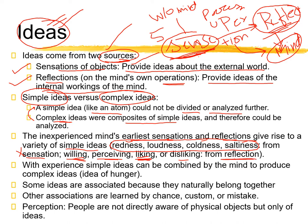With experience, simple ideas can be combined by the mind to produce complex ideas. For example, the idea of hunger — you can see food, but you cannot see hunger. You feel hunger internally, not through the five senses. That is why hunger is given the name of a complex idea.